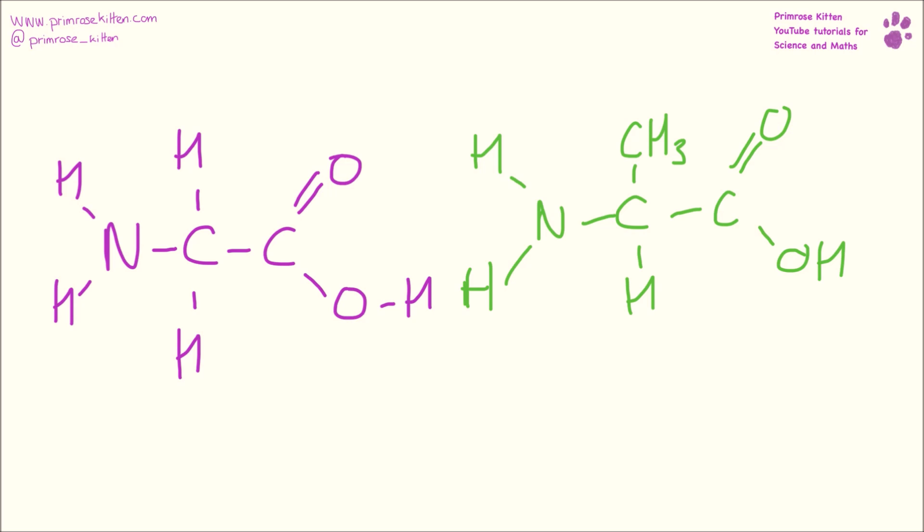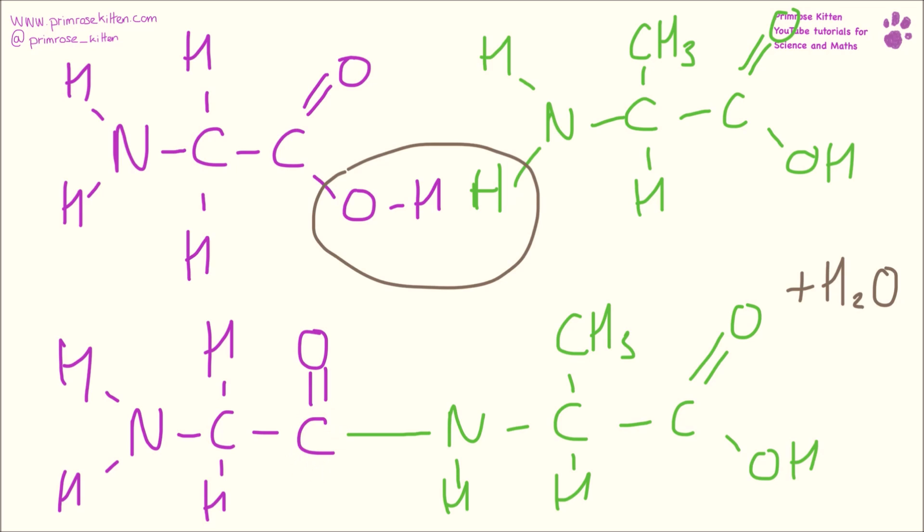When two amino acids join together, it is a condensation reaction. Now here's a condensation reaction because these bits here are the bits that are going to join together, and this is going to release water. We're going to get a bond that is formed between this carbon and this nitrogen, and we are going to get this little bit of water released here. Now obviously these are only two amino acids joining together. You would normally get a very, very long sequence of lots and lots of amino acids joining together, and this is a very long form of condensation polymerization.